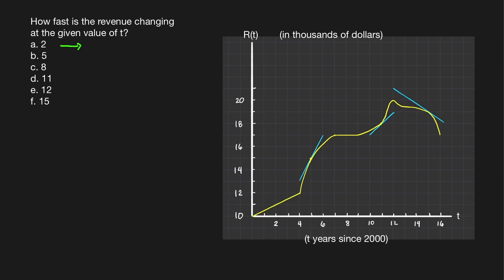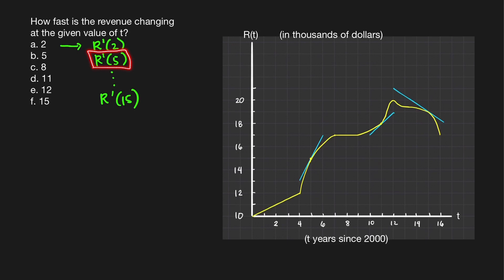In part A, we're looking for the derivative of the revenue function when T equals 2, which is R prime of 2. For part B, we're looking for R prime of 5, and for part F, R prime of 15. The derivative of the revenue function at T equals 2 is the slope of the tangent line at T equals 2. Similarly, R prime of 5 is the slope of the tangent line at T equals 5.